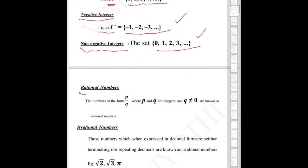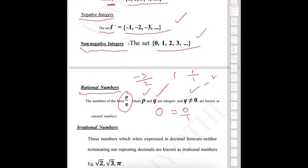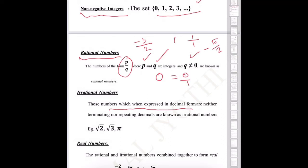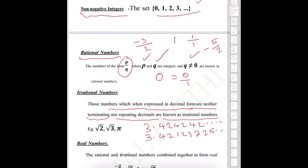Then, rational numbers. These are numbers of the form P by Q, where P and Q are integers and Q is not equal to 0. For example: minus 3 by 2; the number 1, denoted as 1 by 1; the number 0, denoted as 0 by 1; and minus 5 by 2 — these are all rational numbers.